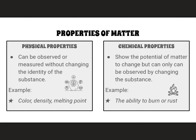All matter has two different kinds of properties: physical properties and chemical properties. Physical properties are those you can observe with your senses and measure without changing the identity of the substance — for instance, observing that a Lego is red. Chemical properties show the potential of matter to change, but you can only observe them by changing the substance — for example, wood has the ability to burn, but you only see this chemical property when the wood is actually on fire and burning.